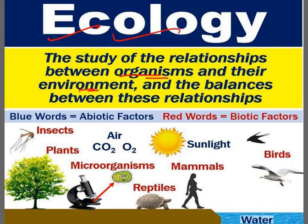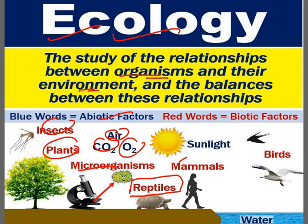Looking at the diagram: plants, insects, and microorganisms are biotic factors — they have life, they respire. The abiotic factors include air, gases, sunlight, and water. These are the non-living components of the ecosystem. That was our ecology concept.